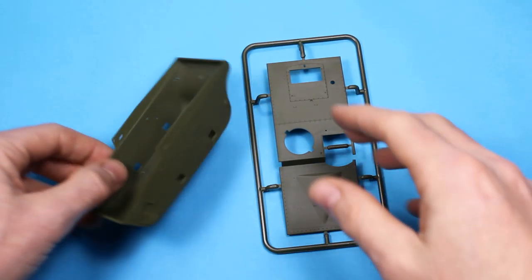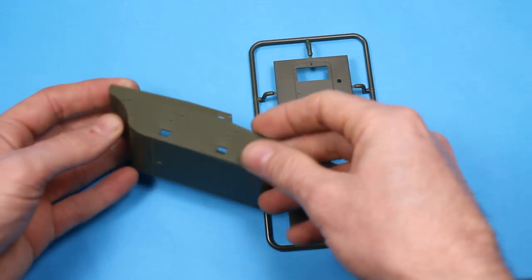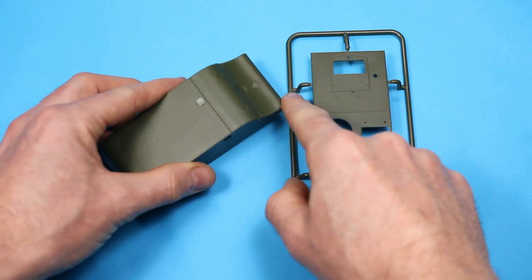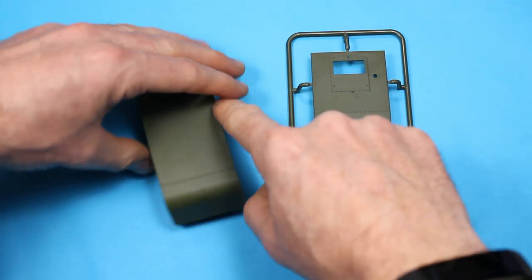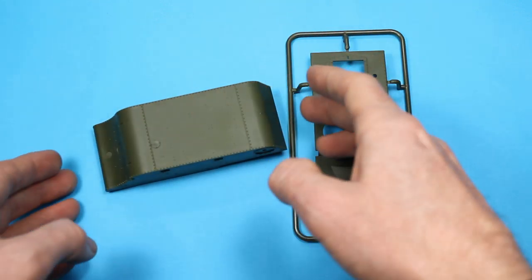Starting with the lower and upper hull, this is actually already in one piece and there's some very nice raised details all the way across. We've got rivet and bolt head detail running along the bottom of the chassis. There's no ejector pin marks, and you've got detail on the underside.